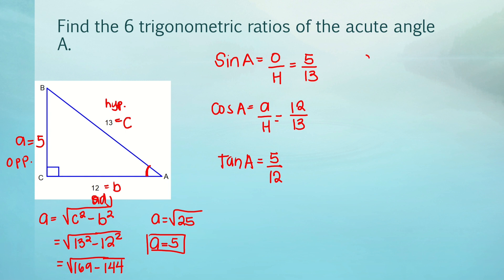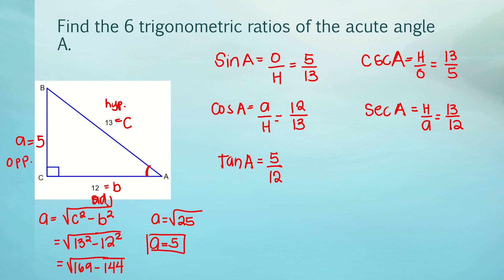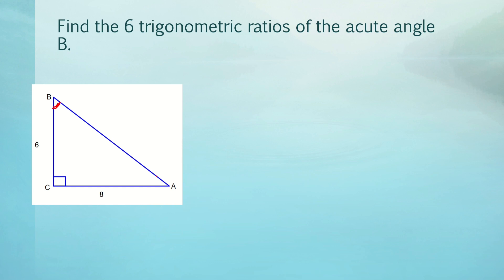The reciprocal of sine A is cosecant A, pronounced 'cosec A,' which is hypotenuse over opposite = 13/5. The reciprocal of cosine A is secant A, which is hypotenuse over adjacent = 13/12. The reciprocal of tangent A is cotangent A, which is adjacent over opposite = 12/5. Those are the six trigonometric ratios for acute angle A.